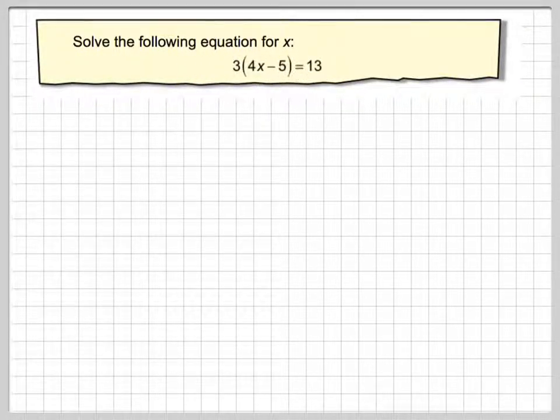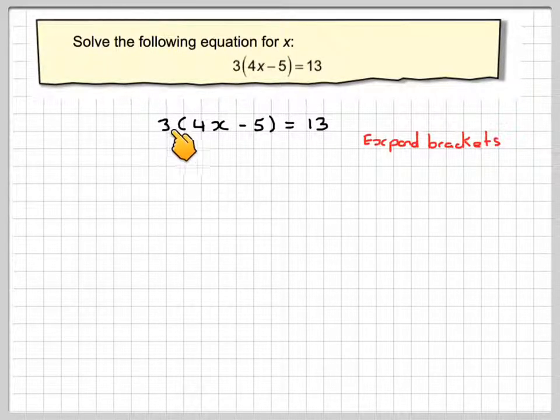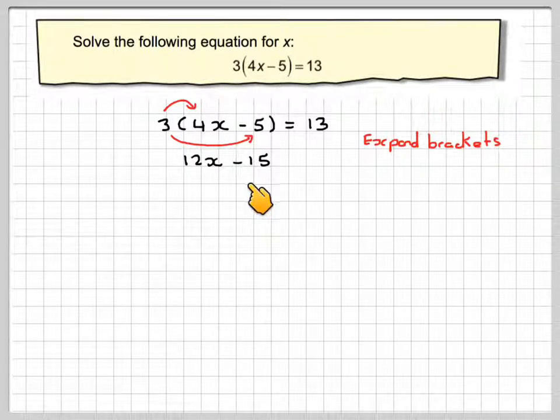Solve the following equation for x. We've got 3 times 4x minus 5 is equal to 13. So writing the equation out, the first step would be to expand the brackets. So we need to do 3 times 4, which gives me 12x, and then 3 times minus 5, which gives me minus 15, is equal to 13.